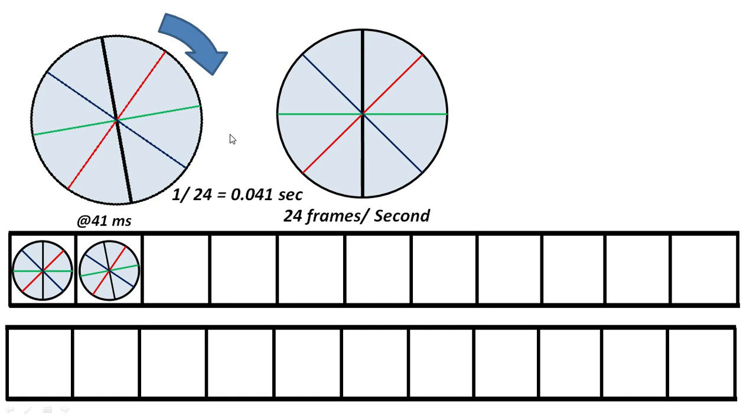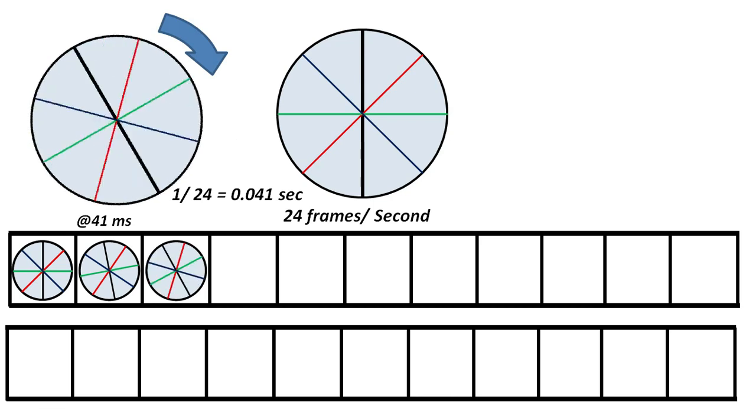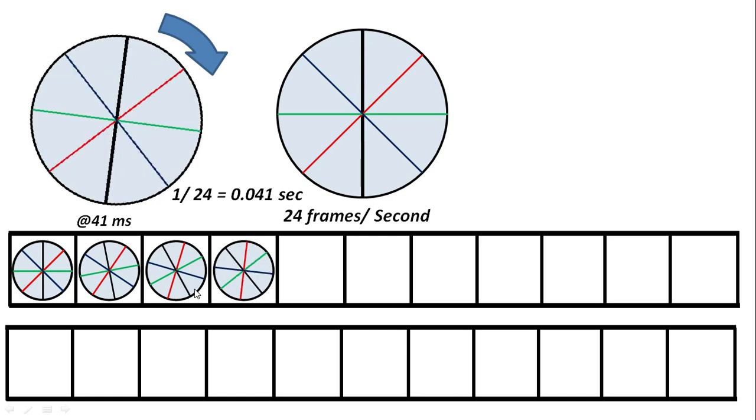Again, after another 41 milliseconds, the third picture will be captured. Now the wheel would have rotated another 330 to 340 degrees, just short of its original position. And the image will be captured like this. Similarly, it will capture images every 41 milliseconds and it will be framed like this.